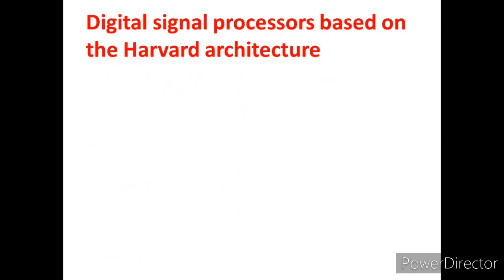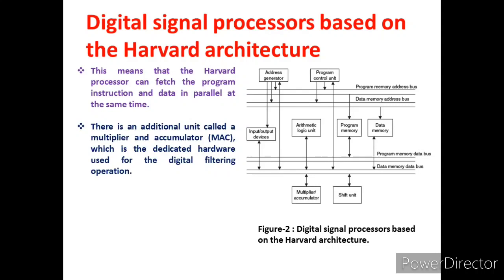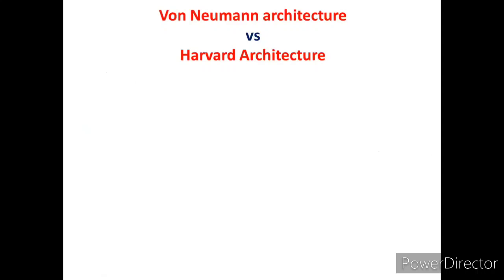Due to this separation, the speed is increased. The Harvard processor can fetch program instructions and data in parallel at the same time. There is an additional unit called a MAC — Multiply and Accumulate — which is dedicated hardware used for digital filtering operations, further increasing speed. Another additional unit is the shift unit, used for scaling operations in floating point implementation when the processor performs digital filtering.